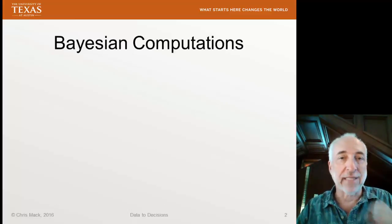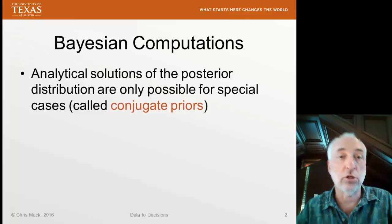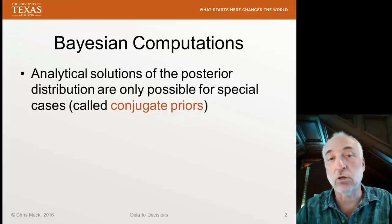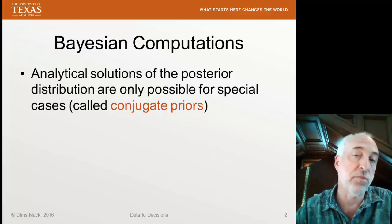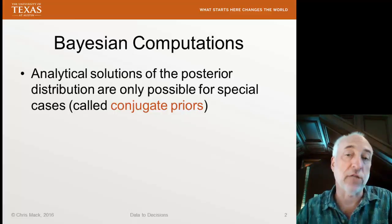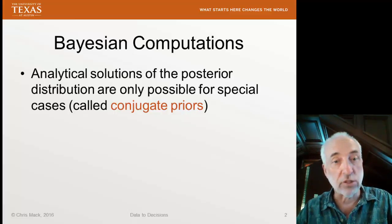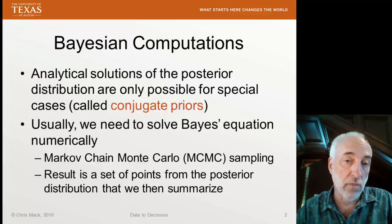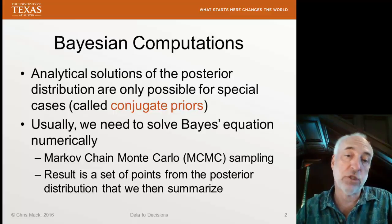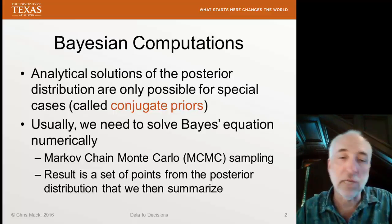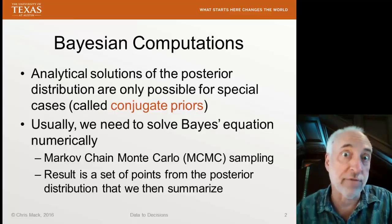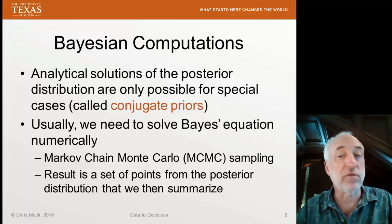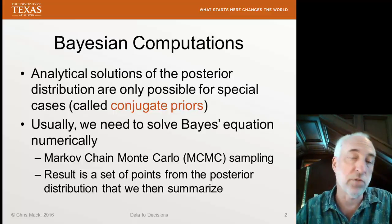We talked last time about how Bayesian computations are generally done. In some special cases, we can generate analytical solutions for the posterior distribution, but only when we have these special conjugate priors and other specific conditions applying. Generally, though, we solve Bayes' equation numerically. We can use Markov chain Monte Carlo sampling, something called Gibbs sampling, and the result is a set of points for the posterior distribution.